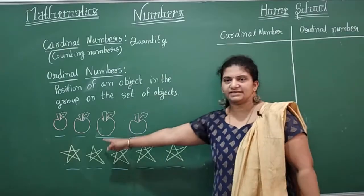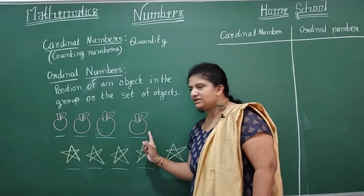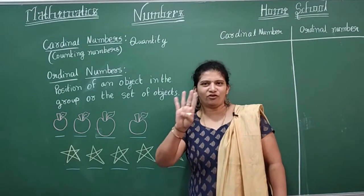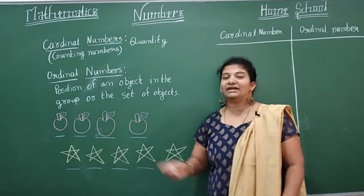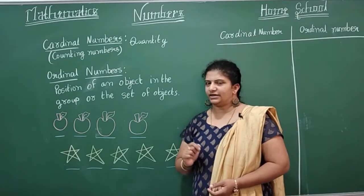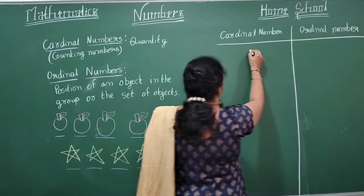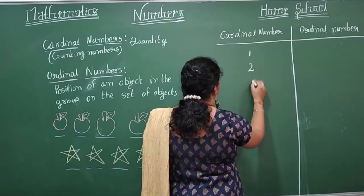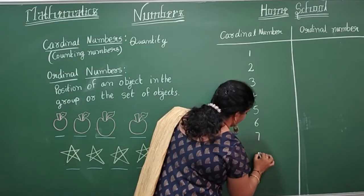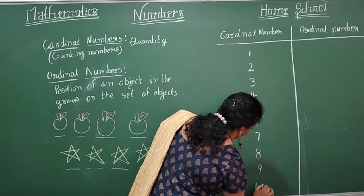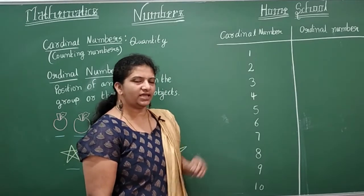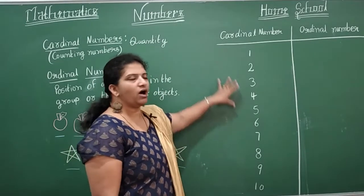Let's see an example. Here are some apples — how many apples are there? Let's count: 1, 2, 3, 4. There are 4 apples. When you count the quantity, the cardinal number shows the quantity of the apples. So all the numbers you say are cardinal numbers — 1, 2, 3, 4, 5, 6, 7, 8, 9, 10, and so on. All numbers are cardinal numbers.